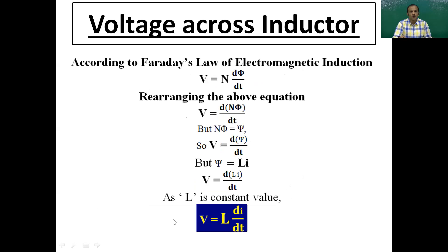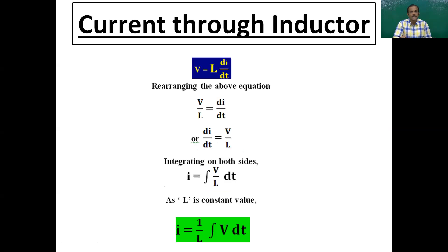Now we'll find how voltage is developed across an inductor using Faraday's law of electromagnetic induction: v = N dφ/dt. We can write this as v = d(Nφ)/dt = dψ/dt. Since ψ = Li, substituting gives the very important equation: v = L di/dt. Here, v is the voltage across the inductor, L is the inductance, and i is the current through the inductor. This equation is fundamental and is used extensively in first-order systems to find the voltage drop across an inductor.